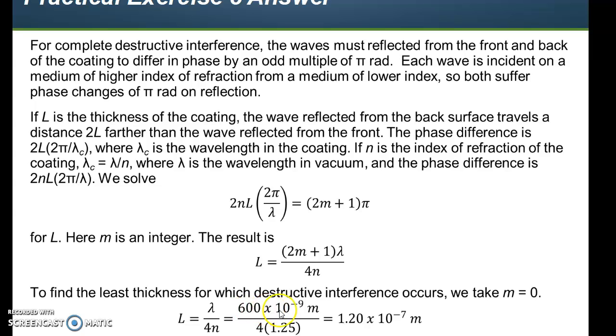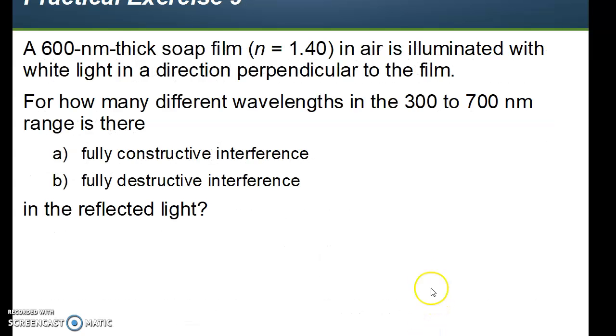So, the thickness should be 1.20 times 10 to the minus 7 meters. Here's another one. This is an interesting one. This is practical exercise number 9, problem number 36. Here you've got a soap film. It's 600 nanometers thick. The index of refraction for the soap film is 1.40, and it's illuminated with white light in a direction perpendicular to the film. How many different wavelengths in the 300 to 700 nanometer range are there where you have fully constructive interference and fully destructive interference in the reflected light?